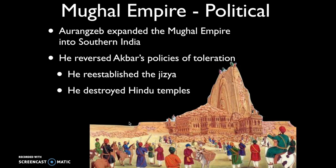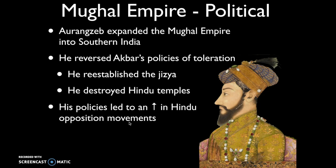Aurangzeb also destroyed Hindu temples — something discussed earlier in relation to the Delhi Sultanate, where some Muslim rulers made efforts to oppress Hindus, partly by destroying temples. These policies led to increased Hindu opposition movements as the Hindu majority became increasingly aware of their oppression by their Muslim minority rulers. However, that story gets largely paused because the British were about to enter India and seize control, oppressing both Hindus and Muslims.